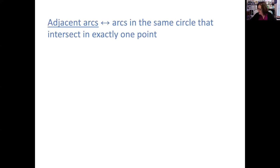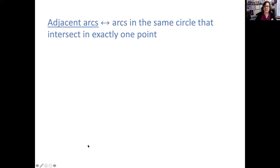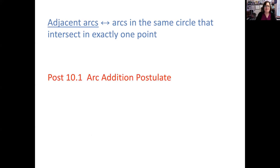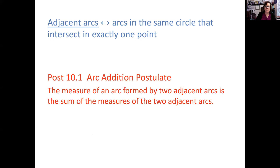Adjacent arcs are arcs in the same circle that intersect at exactly one point — when you see a picture, you'll see that they're next to each other. That gives us our arc addition postulate: the measure of an arc formed by two adjacent arcs is the sum of the measures of the two adjacent arcs.